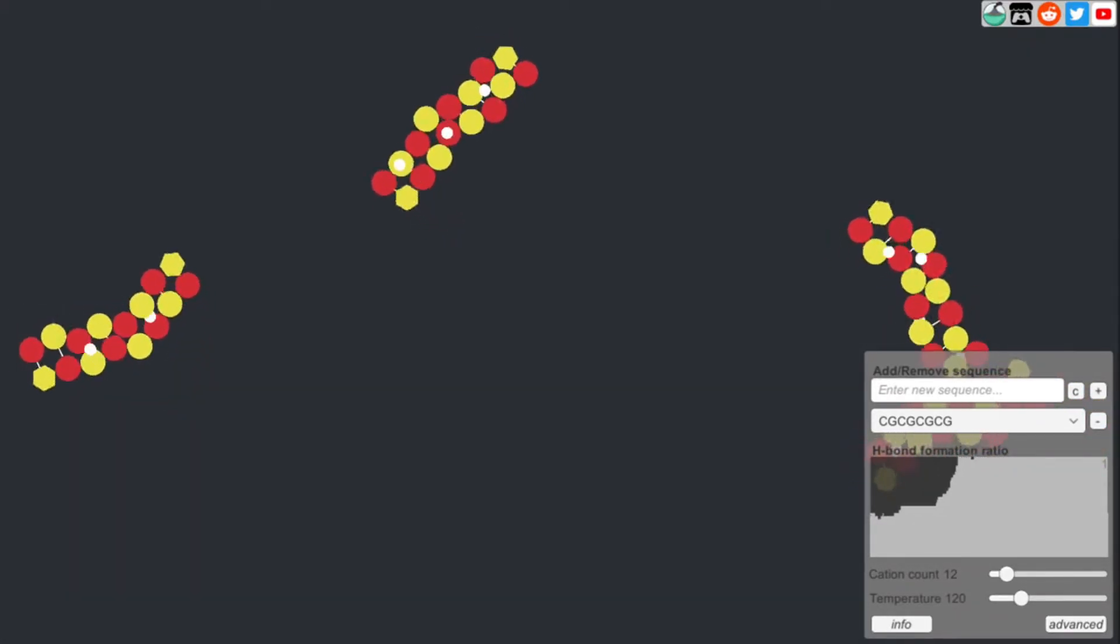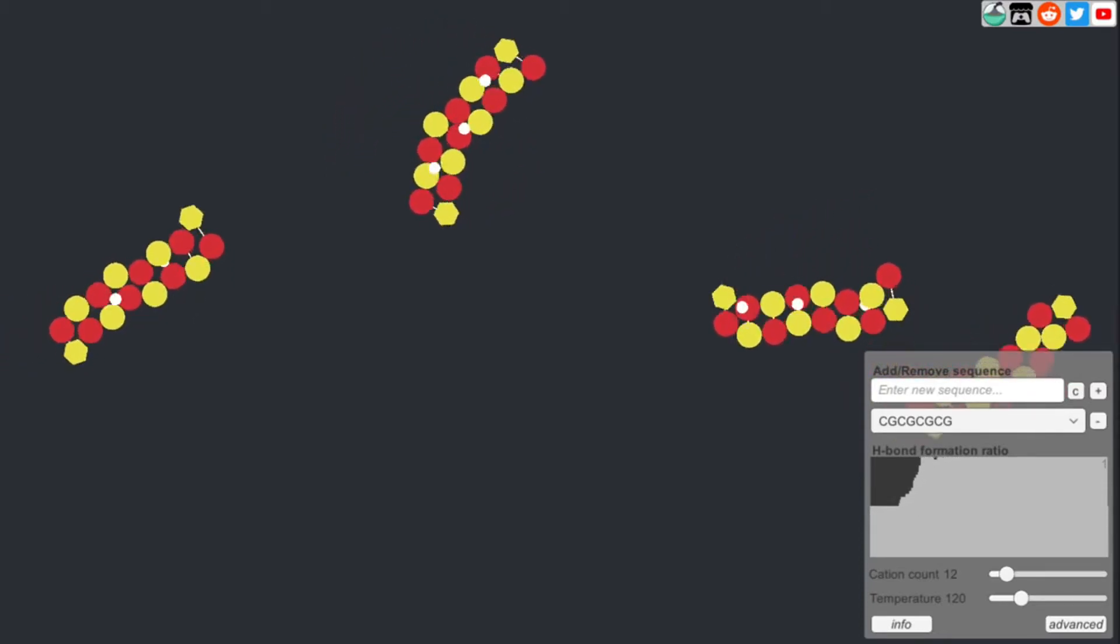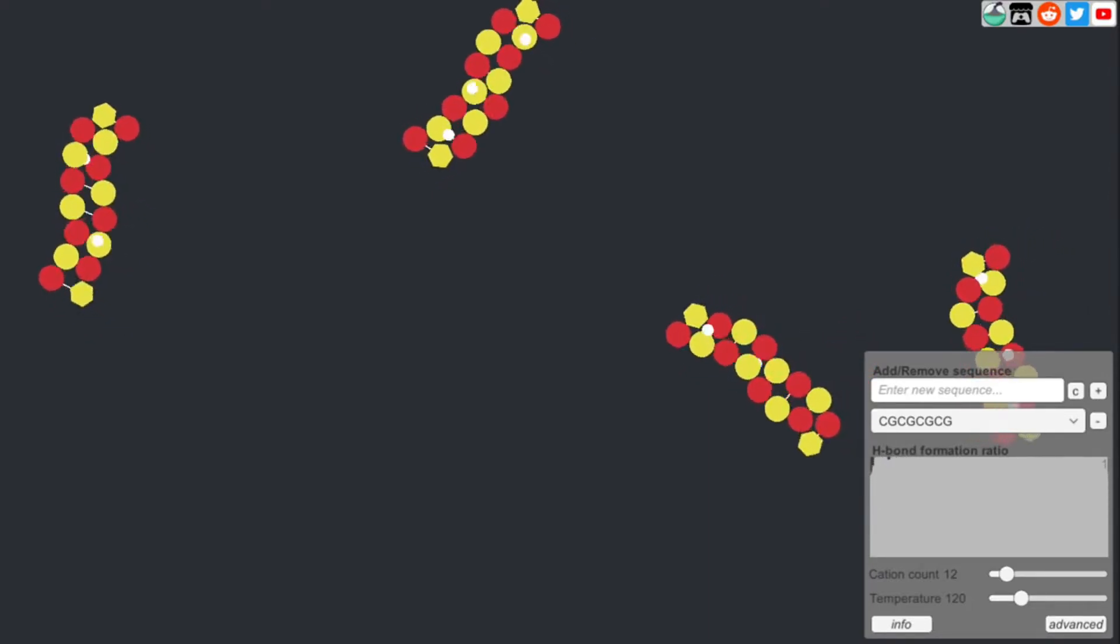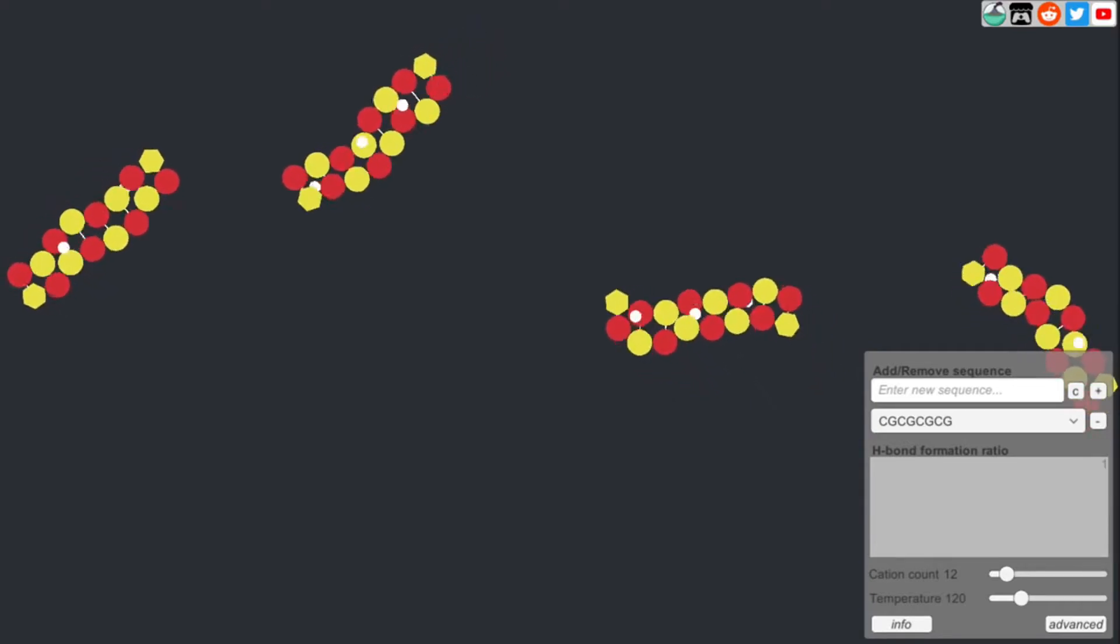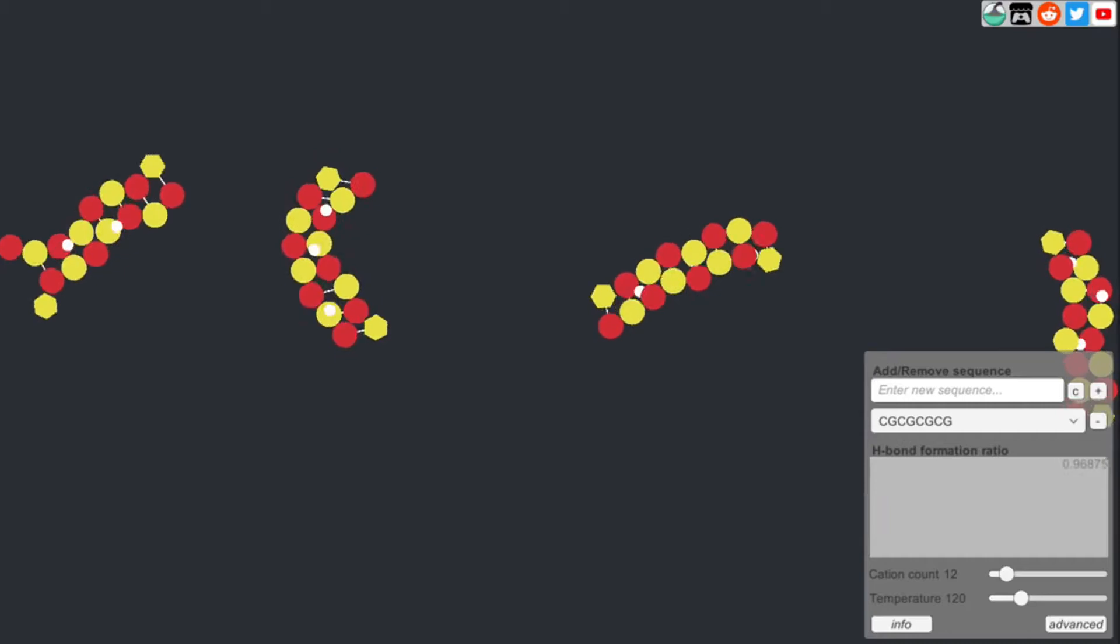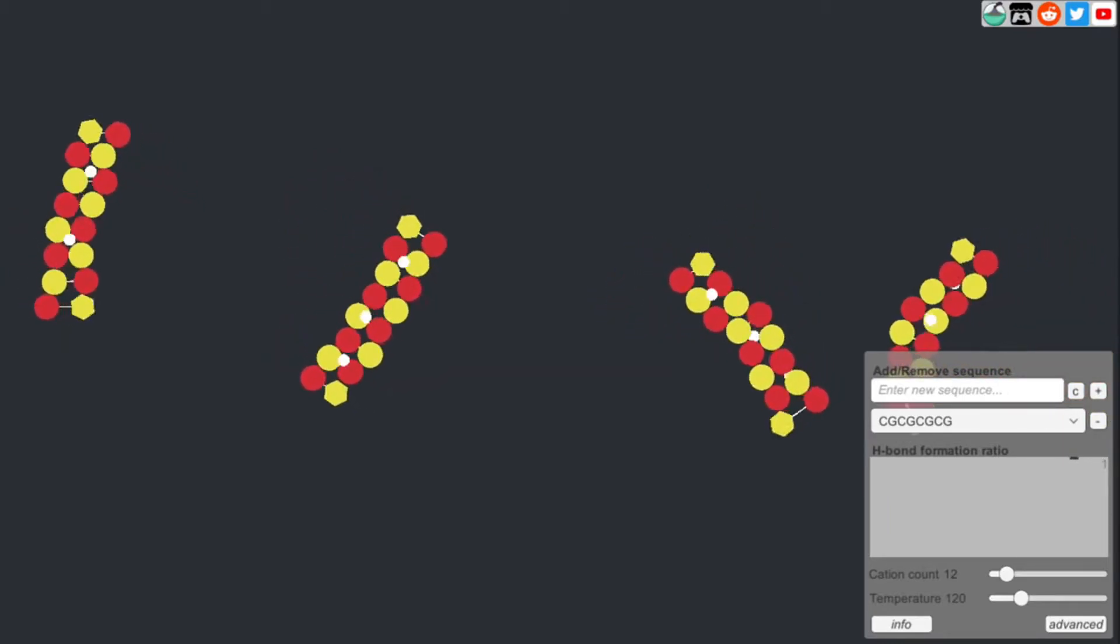Now I would like to show you how each parameter actually is going to affect the DNA formation, starting with the cations. The cations are very important for duplex formation because they keep the DNA together and they do that by counteracting the repulsion between the phosphates of the nucleotides. Now if you remove the cations, then the phosphates will be able to repel each other and the DNA strands will separate.